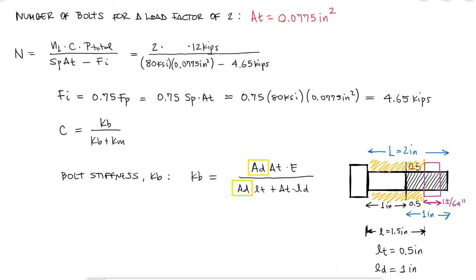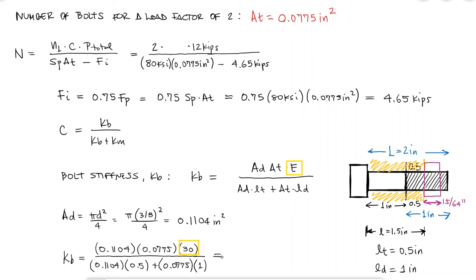The area of the non-threaded portion would be that of a circle using the nominal diameter, and since I already know what the tensile stress area is and what the elastic modulus of the steel is, the bolt stiffness would be equal to 1.934 megapounds per inch.